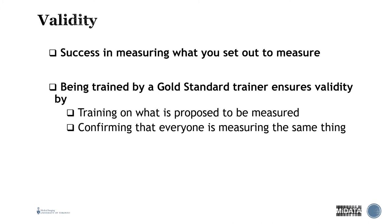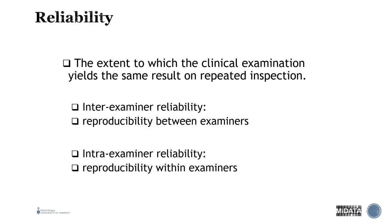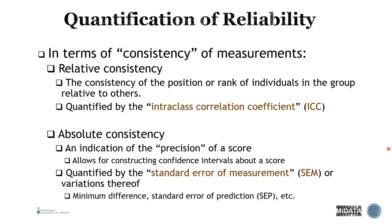Validity is the success in measuring what you set out to measure. Being trained by a gold standard trainer ensures validity by training on what is proposed to be measured and confirming that everyone is measuring the same thing. Reliability is the extent to which the clinical examination yields the same result on repeated inspection — including inter-examiner reliability (reproducibility between examiners) and intra-examiner reliability (reproducibility within an examiner).